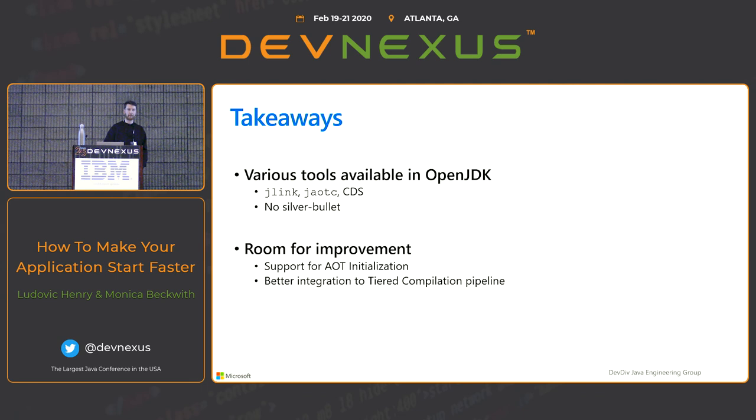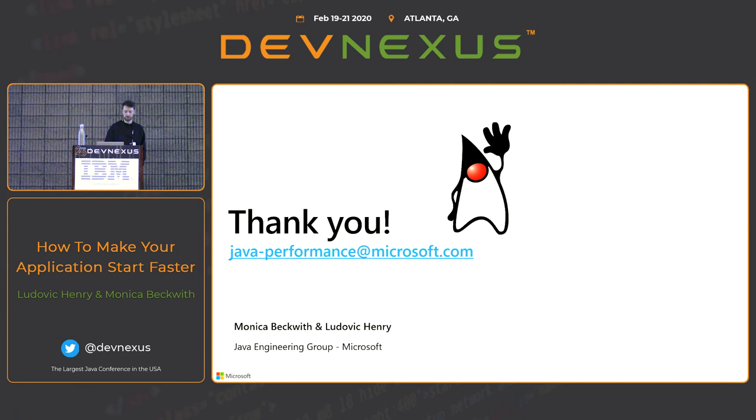Some takeaways: there are various tools available in OpenJDK — J-Link, JOTC, and CDS — but none are a silver bullet. They work well for what they do but won't fix all problems. The areas for improvement are support for AOT initialization and better integration into the tiered compilation pipeline. Thank you very much, and thank you to Monica as well. Happy to answer any questions.